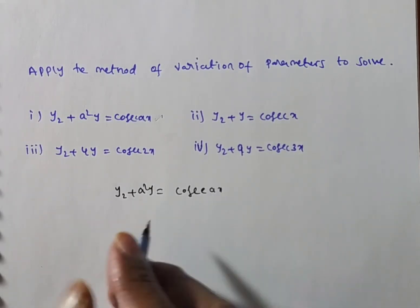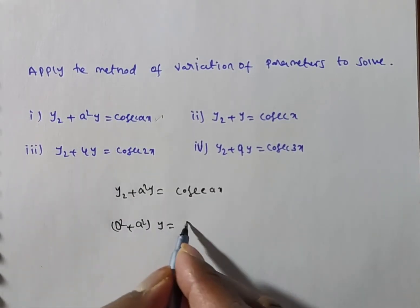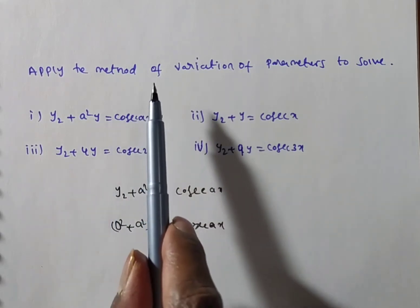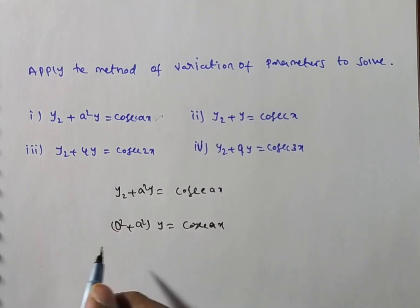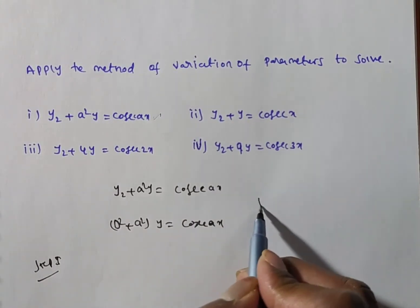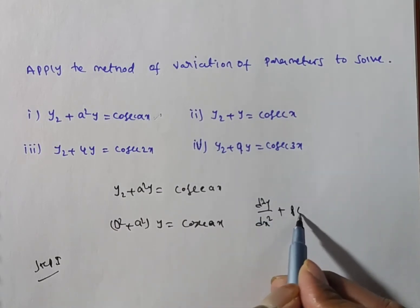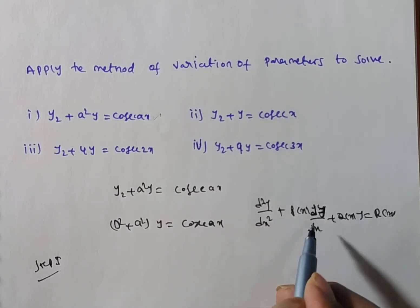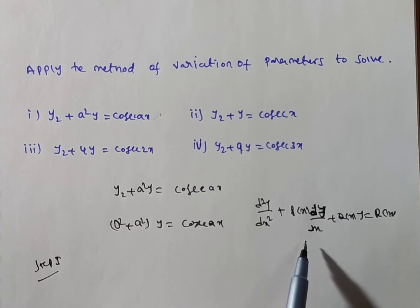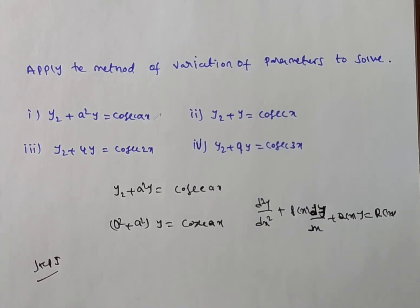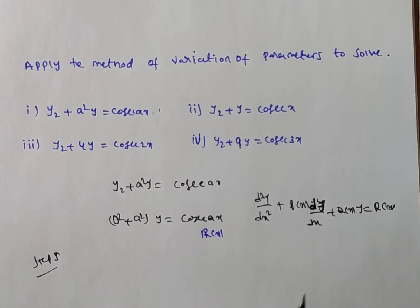This problem can be done by a general method, but they have specified to apply the method of variation of parameters. We rewrite in the standard form: d²y/dx² + p(x)·dy/dx + q(x)·y = r(x). Here, the coefficient of d²y/dx² is already 1, so it is in standard form. Therefore, r(x) = cosec(ax), p(x) = 0, and q(x) = a².